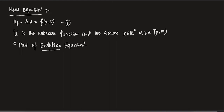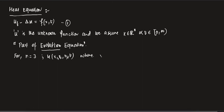Let us come back to this equation. For n equals to 3, u will be a function of x1, x2, x3, and t. There are two kinds of variables here. One is called the spatial variable — x1, x2, x3 — since x is given by (x1, x2, x3) in R^3. The other is the time variable t, which we assume from 0 to infinity.